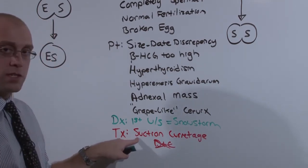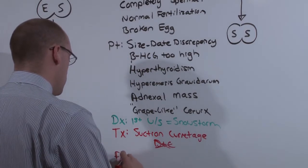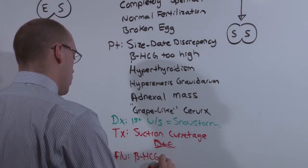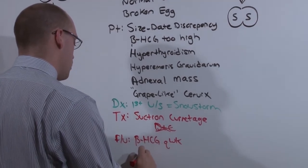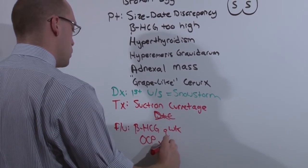And once you get all of the gestational contents out, you have to follow up with beta-HCG every week while ensuring she does not get pregnant again by putting her on oral contraceptives times one year.